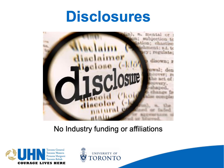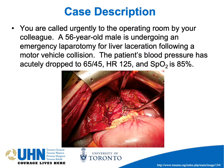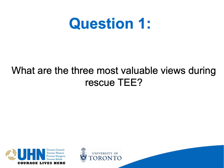We'll do this case-based. You're called urgently to the operating room by your colleague. A 56-year-old man is undergoing an emergency laparotomy for a liver laceration following a motor vehicle collision. The patient's blood pressure has acutely dropped to 65/45, heart rate is 125, and SpO2 is now 85%. You walk into the room and everybody's in quite a panic. You insert the TEE probe with no difficulties. You have one minute to determine what's going on — what are the three most valuable views during the rescue TEE exam?